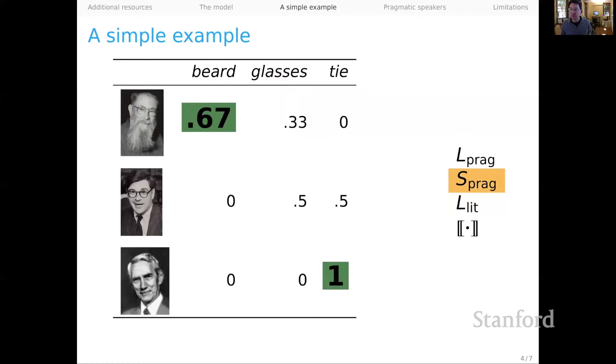When we move to the pragmatic speaker, we already see that the system starts to become more efficient. So we take the speaker perspective along the rows now. And because we're going to assume zero message costs, we can again just row normalize, in this case, from the previous matrix, having transposed it. And now you can see that on trying to communicate about Lewis, the speaker should just choose beard. There's an overwhelming bias for that. And down here on observing Shannon, or wanting to talk about Shannon, the speaker should say tie. That's completely unambiguous. But we still have a problem. If we want to refer to Grice, we have kind of no bias about whether we should choose glasses or tie. But already, we have a more efficient system than we did for the literal listener.